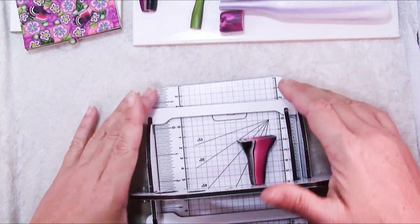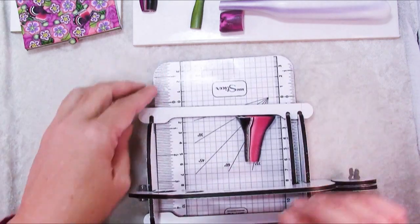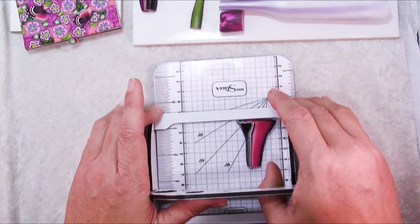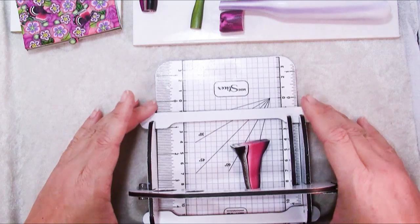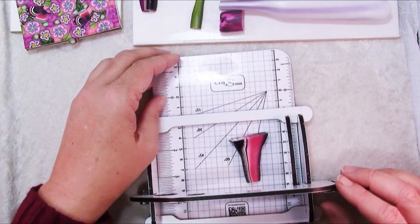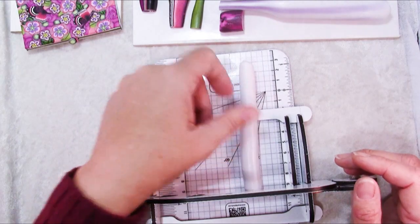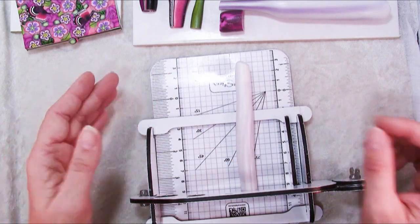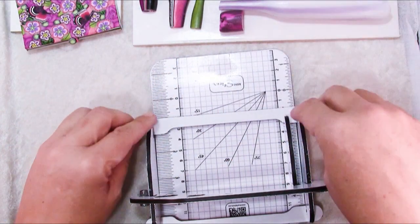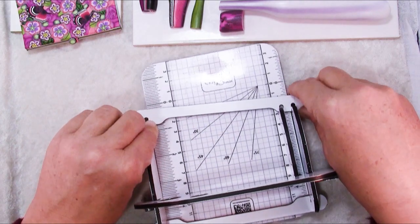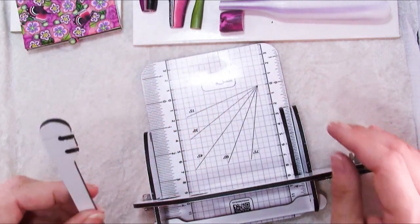And this cane is short enough that if I wanted to slice it, I would not need to pull this out. But if I get much longer than this, like if I want to slice this cane, it's just in the way. So I've found when I'm ready to start slicing, this comes off.